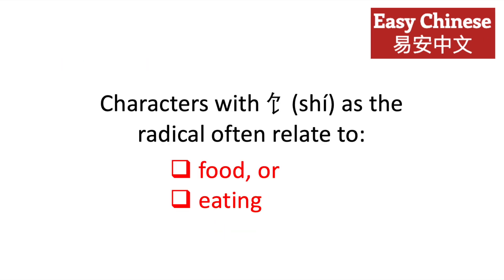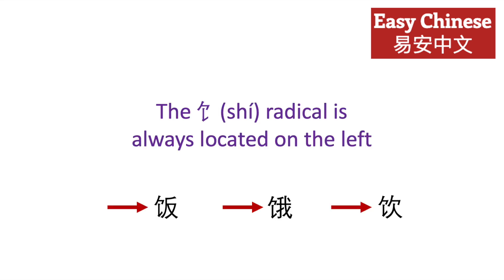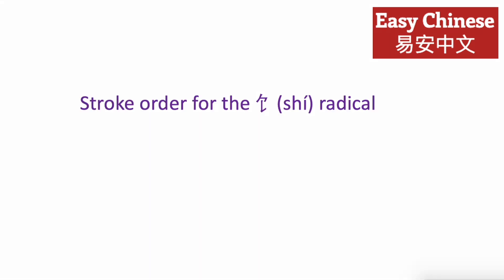Characters with 食 as the radical often relate to food or eating. The 食 radical is always located on the left. The stroke order for the 食 radical is one, two, three.